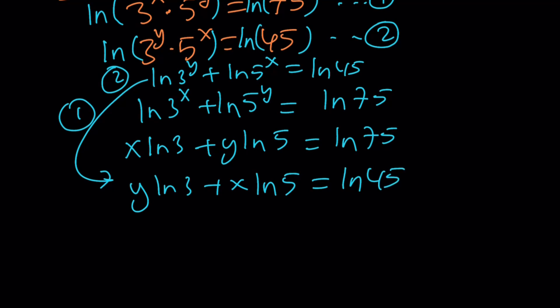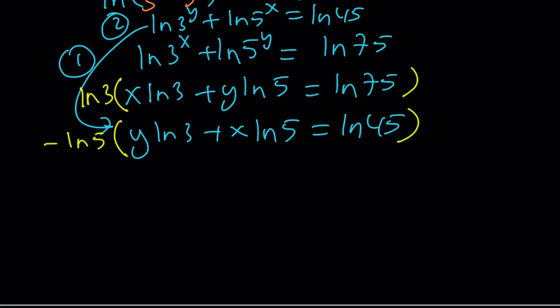Since you're trying to solve for either x or y first, let's eliminate one of them. So let's eliminate y. We can multiply the first equation by ln 3 on both sides and multiply the second equation by negative ln 5 because that's going to get rid of the y values.